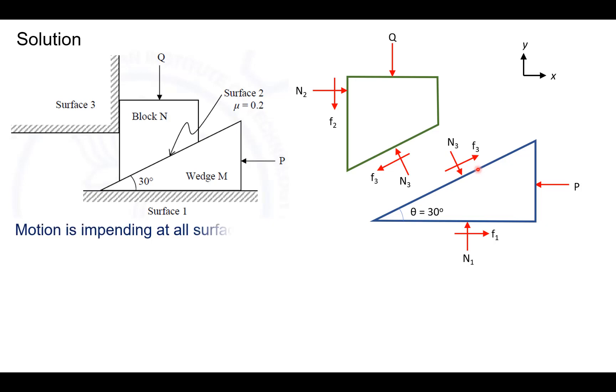Now it is to be noted that in the problem, motion is impending on all the surfaces. Hence, frictional forces can be trivially replaced with the coefficient of friction times the surface normal forces as shown here. It is further given in the question that surface 1 and surface 3 are frictionless and the coefficient of friction at surface 2 is given to be 0.2. Hence, we can replace mu N2 and mu N1 to be 0.